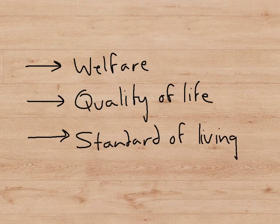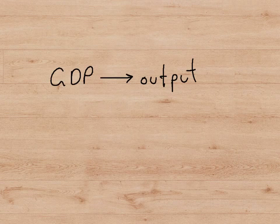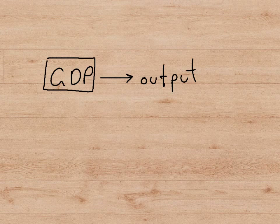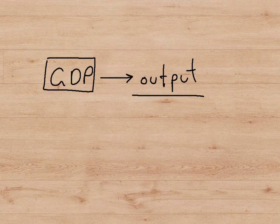These words really mean how happy we feel in our lives, how enjoyable our lives are, and how satisfying they are. So if this is what we're trying to measure, GDP seems, at first sight anyway, to be a relatively inadequate measure of welfare because it's concentrating on output. Output or income does have a connection with welfare, but GDP has many weaknesses as a measure of welfare.